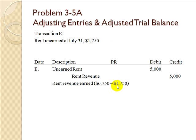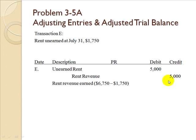In Transaction E, the rent unearned at July 31st is $1,750. Looking at the unadjusted trial balance on page 141, the unearned rent account has a credit balance of $6,750. Unearned rent is a liability incurred when a customer prepays for services not yet rendered. Starting with the beginning balance of $6,750 and deducting the ending balance, we determine how much was earned. We debit unearned rent $5,000 and credit rent revenue $5,000, bringing unearned rent down to $1,750 and adding $5,000 in revenue.